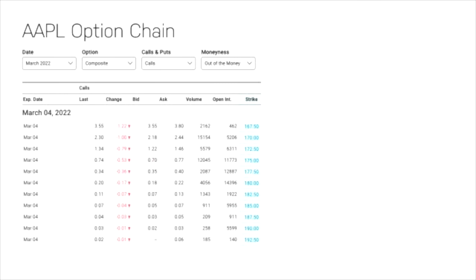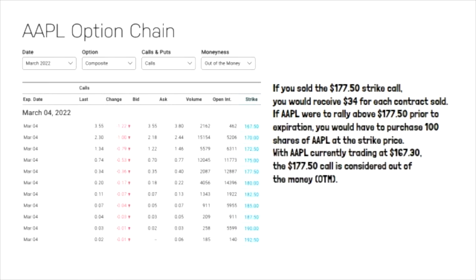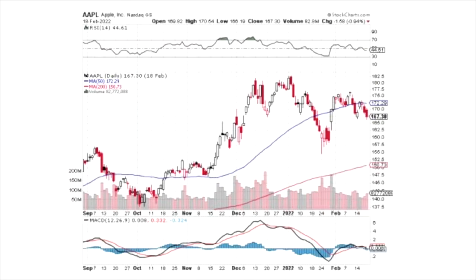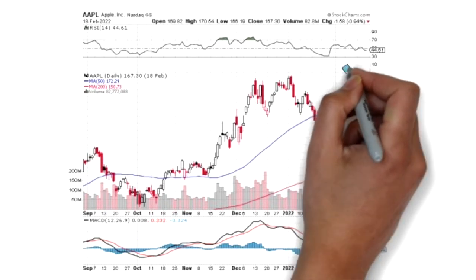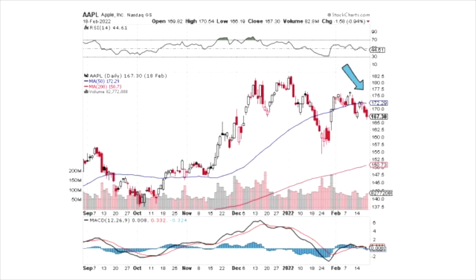For instance, let's say Apple is trading at $167.30 per share. If you sold the $177.50 call, you would receive $34 for each contract sold. If Apple were to rally above $177.50, you would have to purchase 100 shares of Apple at the strike price for a total of $17,750. As long as Apple were to stay below the strike price of $177.50, you will keep your entire premium of $34 for each contract sold.